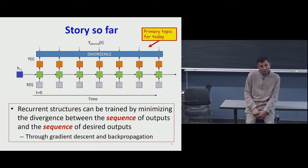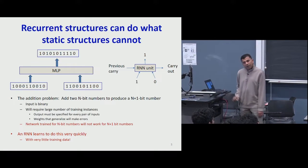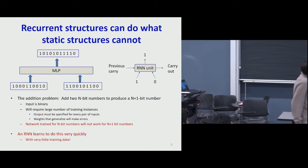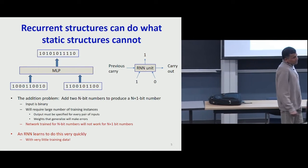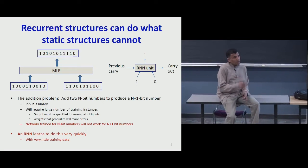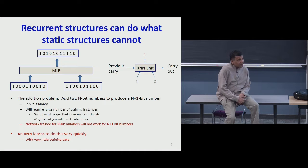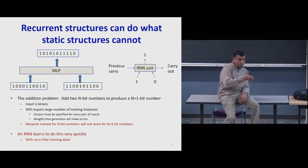To see the difference, consider the addition problem again. If I had a recurrent network modeling it, and I were training it to learn to add binary numbers with inputs coming in least significant bit first, an error in the first bit doesn't really change your output very much. But an error in the fifth bit results in a factor of 32 in the actual error between the two numbers represented. So the manner in which you compute your error actually depends on the position where the error occurred.